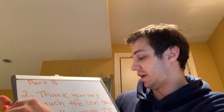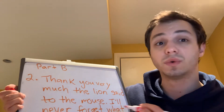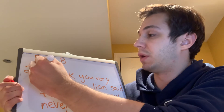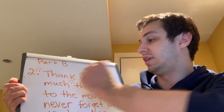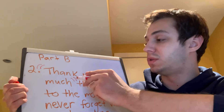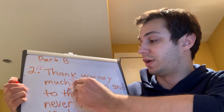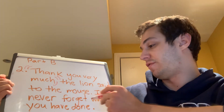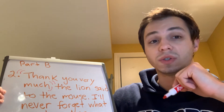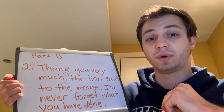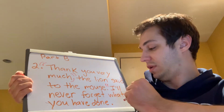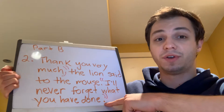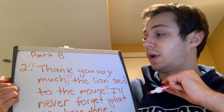Let's work on it together. We need to find the exact words the lion said — those exact words are "thank you very much". So around those words I'm going to put quotation marks at the beginning and at the end of the exact words spoken. Before my closing quotation marks, I need to add a comma. For the second sentence, "I'll never forget what you have done" — those are also exact words spoken, so I put quotation marks right before "I'll" and at the end. I don't need to add a comma there, and we already have the period written in.